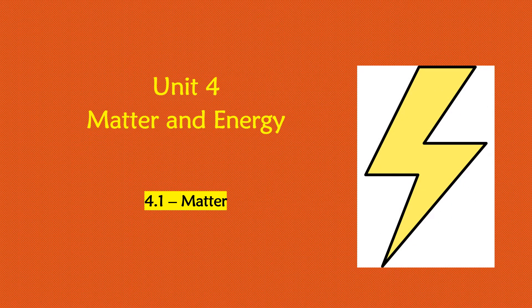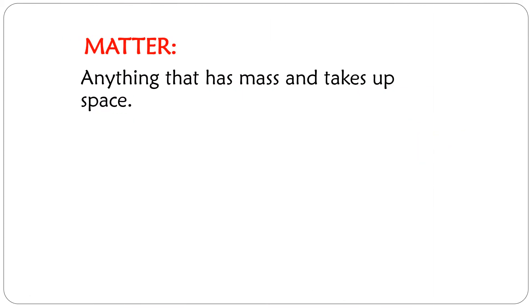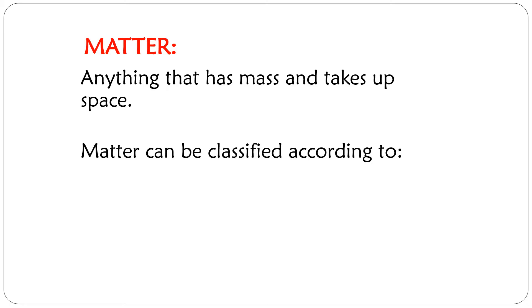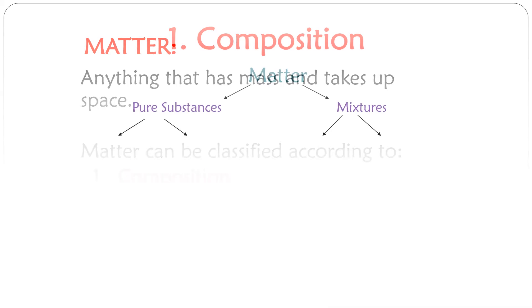Welcome to Chapter 4: Matter and Energy. Today we'll be talking about matter, and you'll be able to classify matter based on its composition and its state. Matter is anything that has mass and takes up space — the amount of space anything takes is its volume. So matter is anything that has mass and volume, which is basically everything in the universe. We can classify matter based on its composition and its physical state.